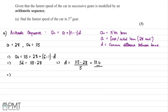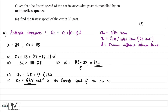A3 is going to be equal to 28 plus (3 minus 1) multiplied by 17.4. Putting this into the calculator, A3 is going to be equal to 62.8 kilometers per hour. So 62.8 kilometers per hour is the fastest speed of the car in third gear.